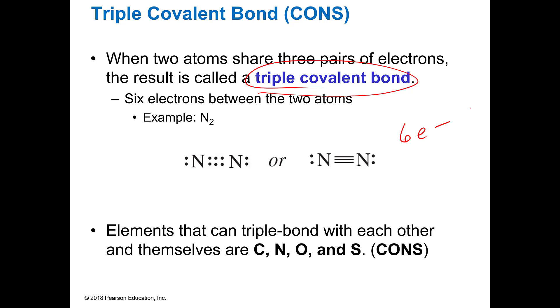Even fewer elements can do that. They're just cons. Carbon, oxygen, nitrogen, and sulfur. So pecans can do a double bond, but cons can do triple bonds.